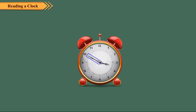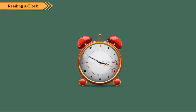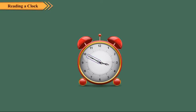Observe this clock. Here, the minute hand is at 10, which means 5 multiplied by 10, is equal to 50 minutes have passed. The hour hand is between 3 and 4. So, we can write the time as 50 minutes past 3. But as a convention, when the minute hand is in the 2nd half hour, we use the word 'to.' So, to write this time, we consider the number of minutes to the next hour. We see that the minute hand has yet to travel 10 minutes to reach the next hour, which is 4. So, we write the time as 10 minutes to 4.